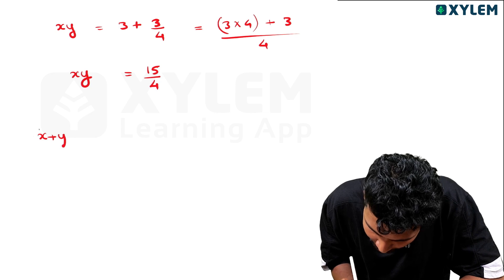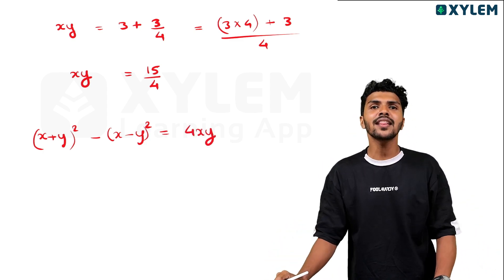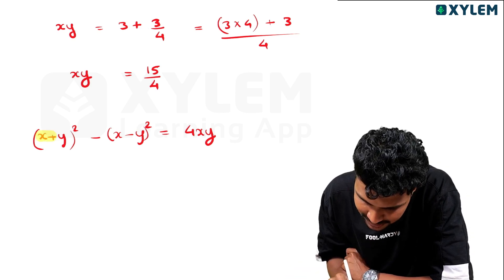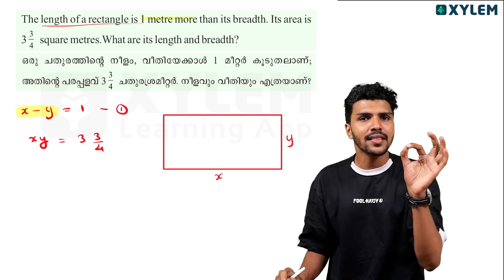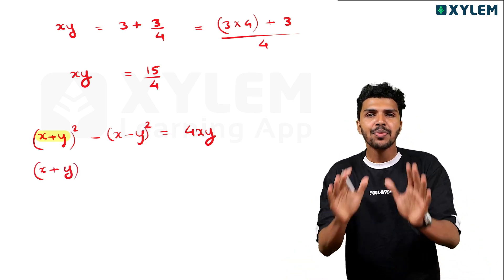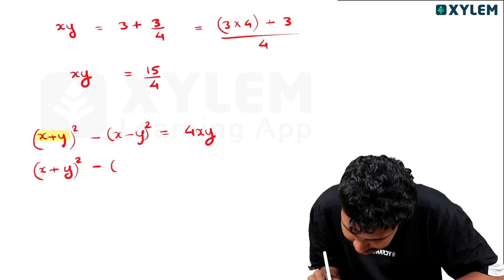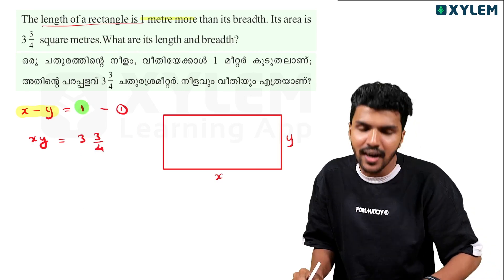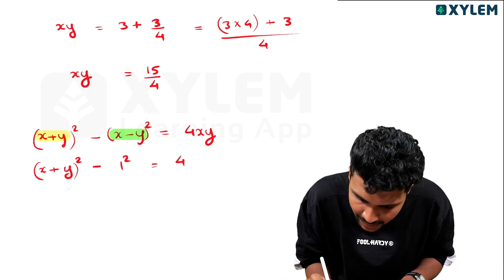We will use the identity: x plus y whole square minus x minus y whole square is equal to 4xy. Here, x minus y is equal to 1. So x plus y whole square minus 1 squared equals 4xy.